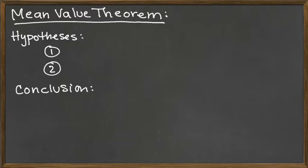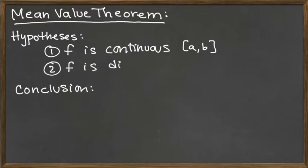And so the two hypotheses for the mean value theorem are that f, the function, is continuous on a closed interval [a,b]. And more than just continuous, it needs to be differentiable. So f is differentiable on the open interval (a,b).